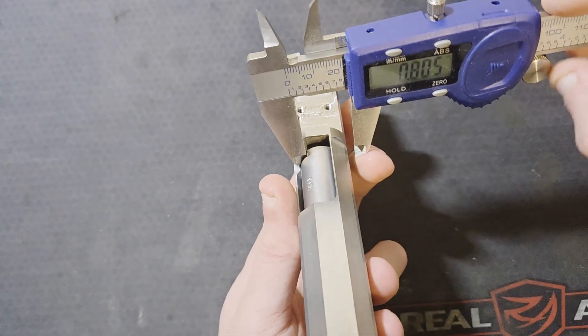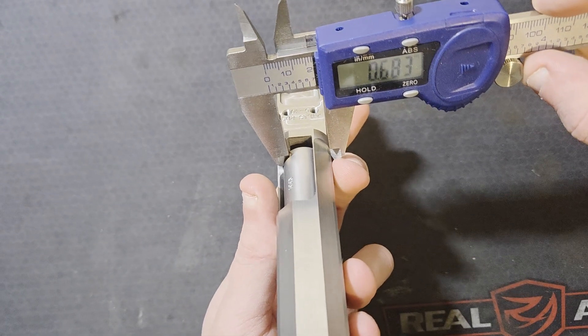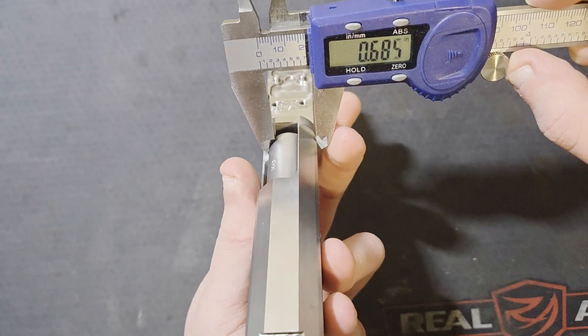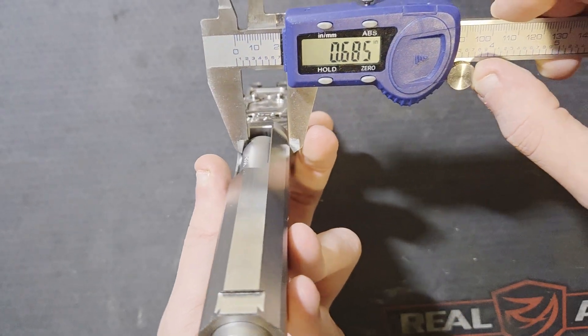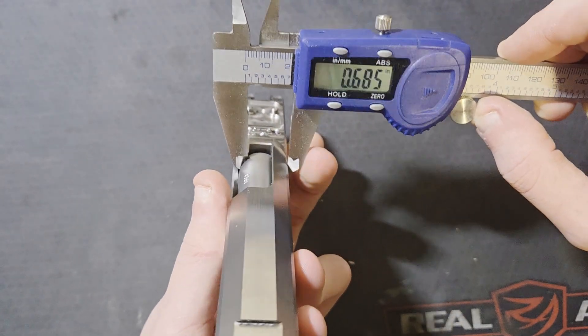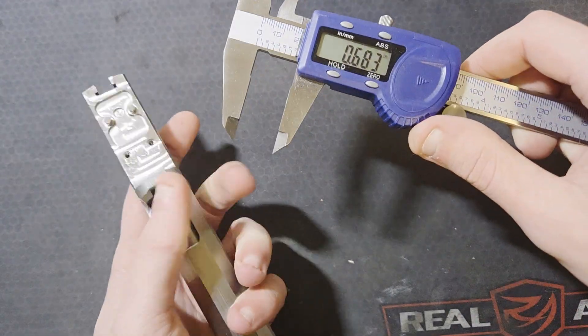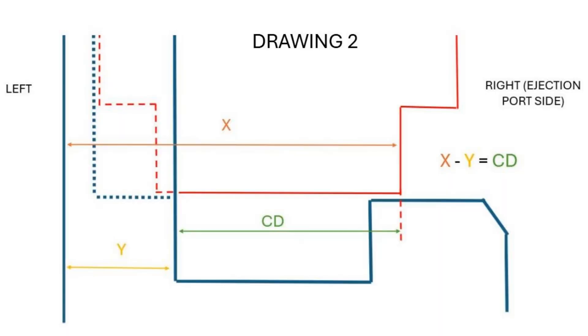Measure from the right side of the hood to the left side of the slide just like this. Measure it a few times. Make sure you're getting nice square contact on your jaws. I'm going to call this dimension X and I am getting 685 thousandths.